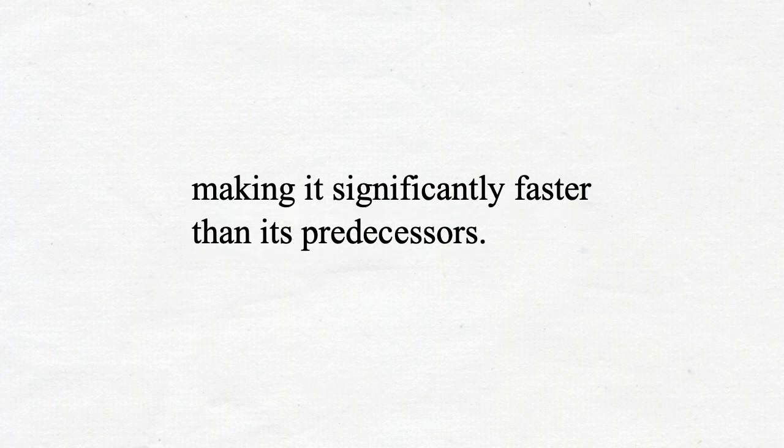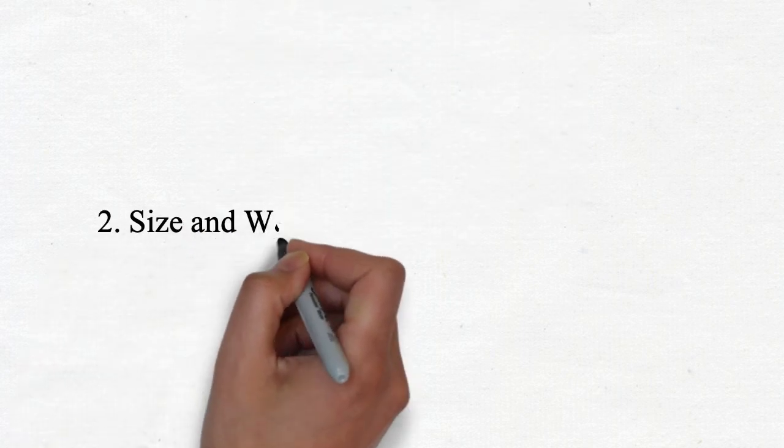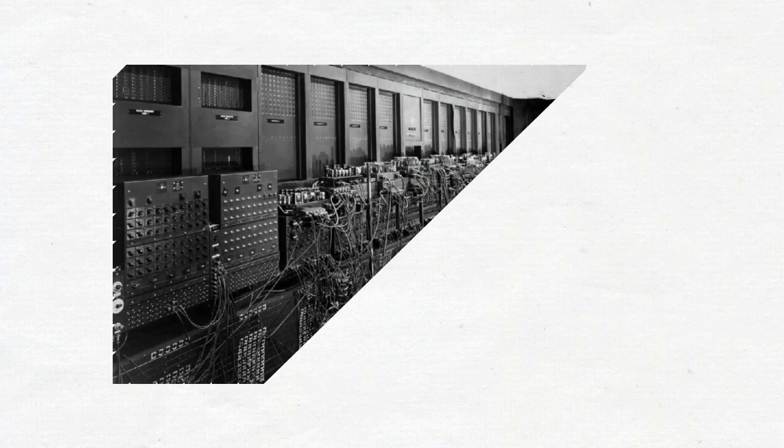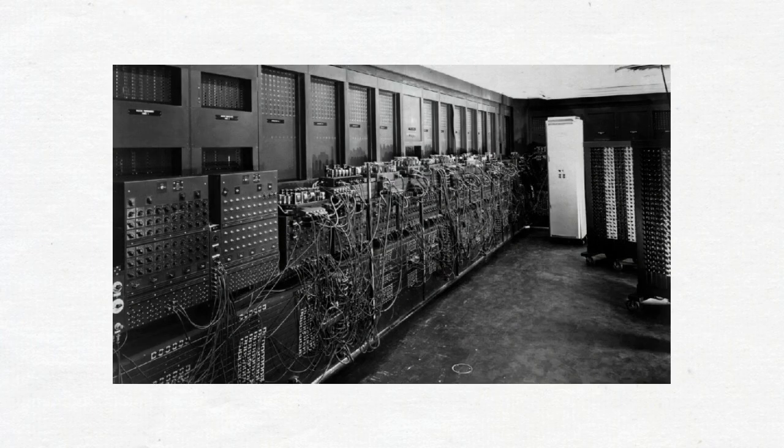Number 2 is Size and Weight. ENIAC was massive, covering about 1,800 square feet of floor space and weighing around 30 tons. It consisted of 40 panels, each 9 feet tall.